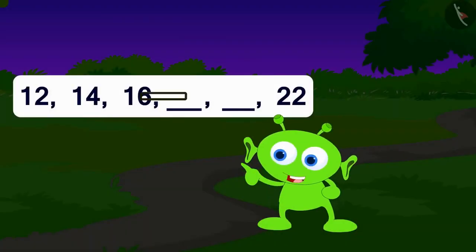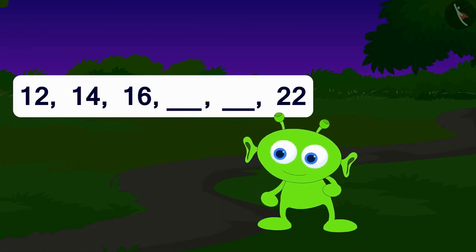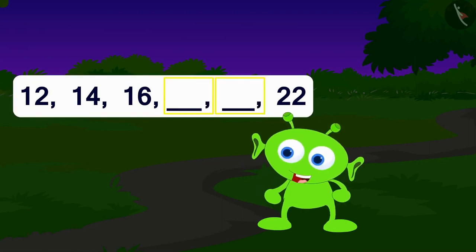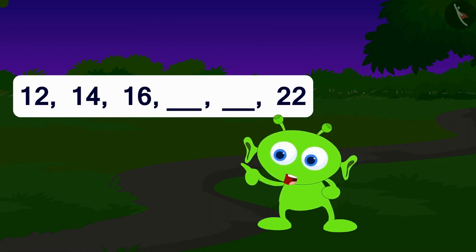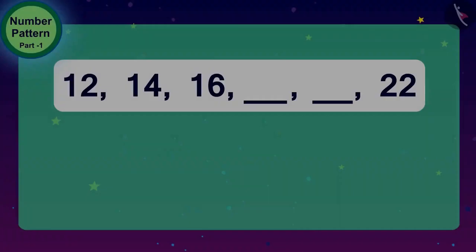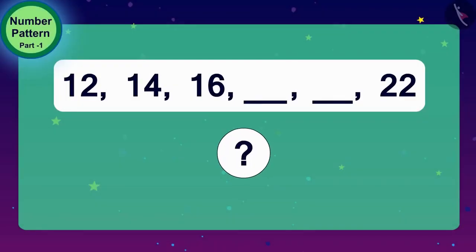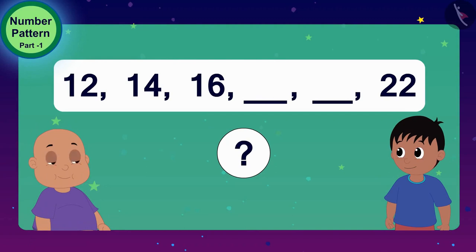Look — even numbers! But there are some numbers missing here. Can you find these numbers? This is your first puzzle. The alien told Raju and Bablu. Children, can you help Raju and Bablu in filling the blanks?